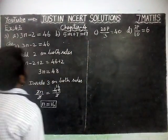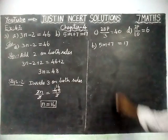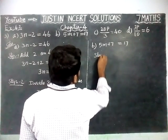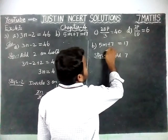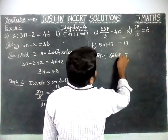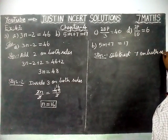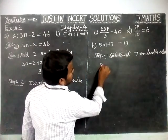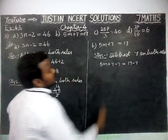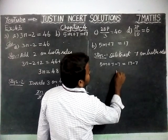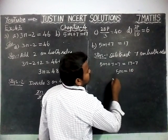Now, part B. The equation is 5m plus 7 equal to 17. We are going to cancel this 7. In step 1, since this is plus 7, we are going to subtract 7 on both sides. So 5m plus 7 minus 7 is equal to 17 minus 7. Plus 7 minus 7 gets cancelled, leaving 5m equal to 10.